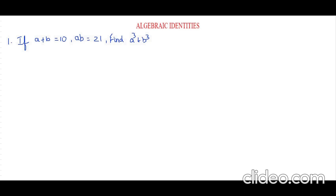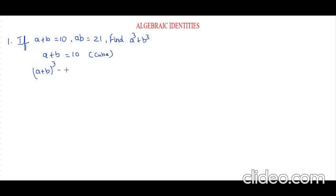Now let's see what is given. We have a plus b equals 10. First, let's cube both the sides. By cubing both the sides, we get a plus b whole cube equals 10 cube.